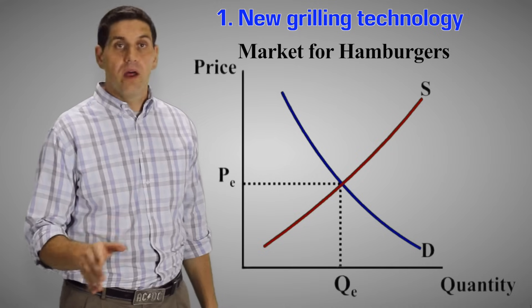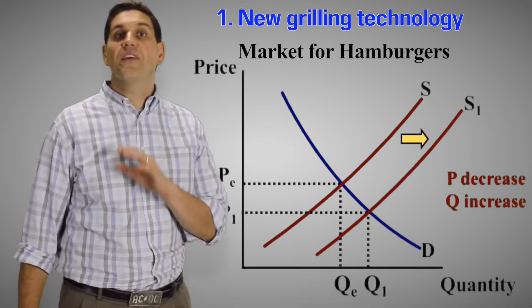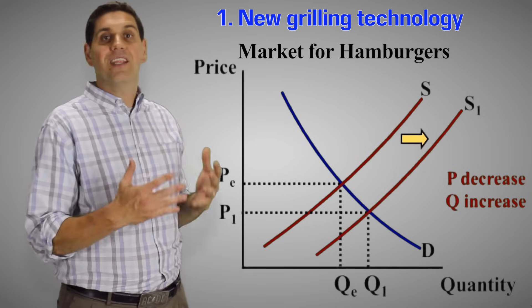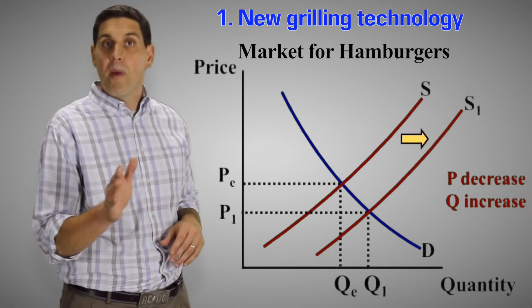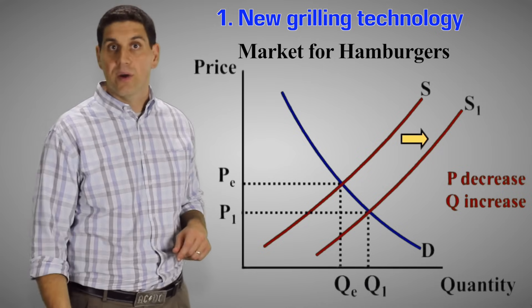For the first one, new grilling technology would cause supply to shift to the right or increase. Now this is supply because this is something that's going to increase the production of hamburgers. And remember technology is a shifter. The graph tells us the price will decrease and the quantity is going to increase.